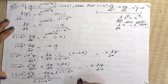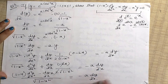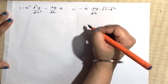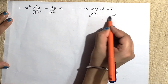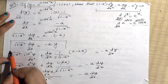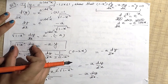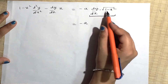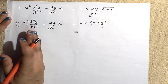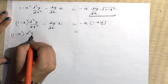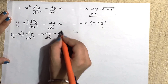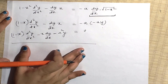So the final result is (1−x²)·d²y/dx² − x·dy/dx = a²y, which is proved. Thank you students for watching this video. Please like, share, and subscribe to my channel.